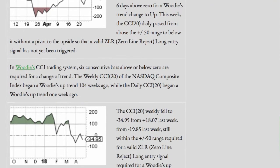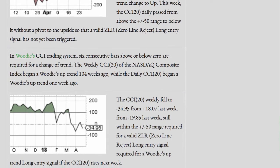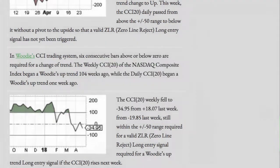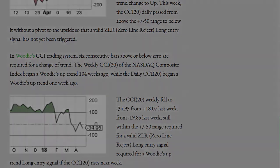In Woody's CCI 20 daily, six consecutive bars above or below zero are required for a change of trend. The weekly CCI 20 of the NASDAQ composite index began a Woody's uptrend 104 weeks ago, while the daily CCI 20 began a Woody's uptrend one week ago. The CCI 20 weekly fell to a negative 34.95 from a positive 18.07 last week, still within the plus or minus 50 range required for a valid zero-line reject long entry signal, if the CCI 20 weekly rises next week.